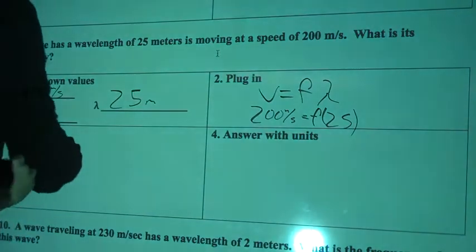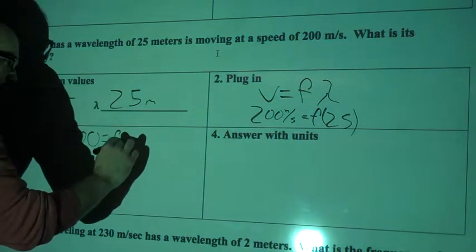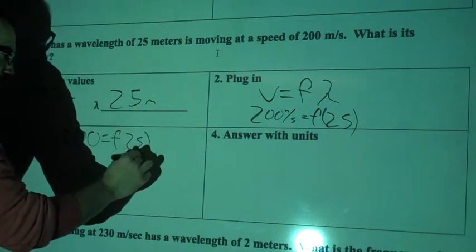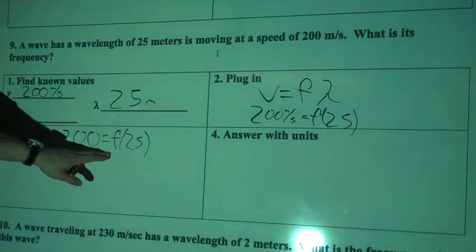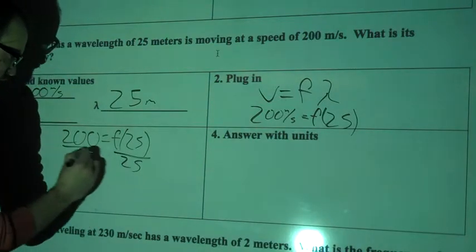So let's bring this down and solve it. So 200 equals F times 25, or frequency times 25. OK, we want to get F by itself. So I'm going to divide both sides by 25, divided by 25.